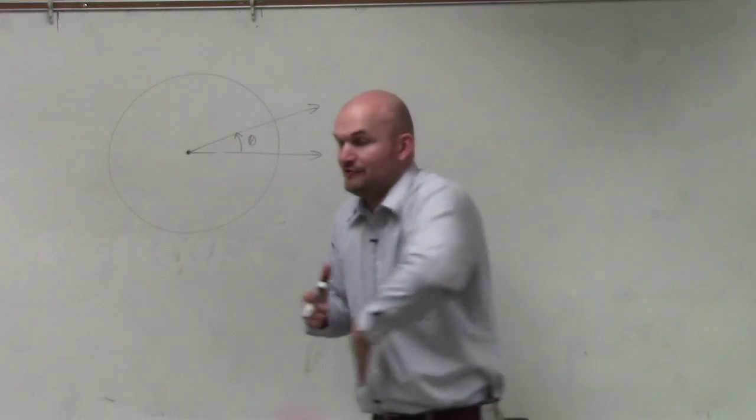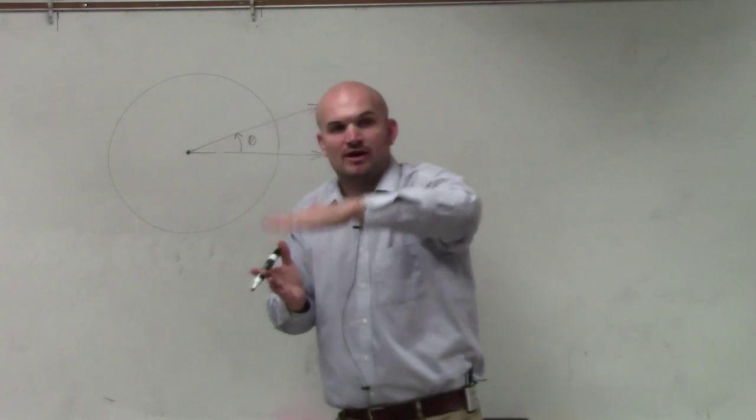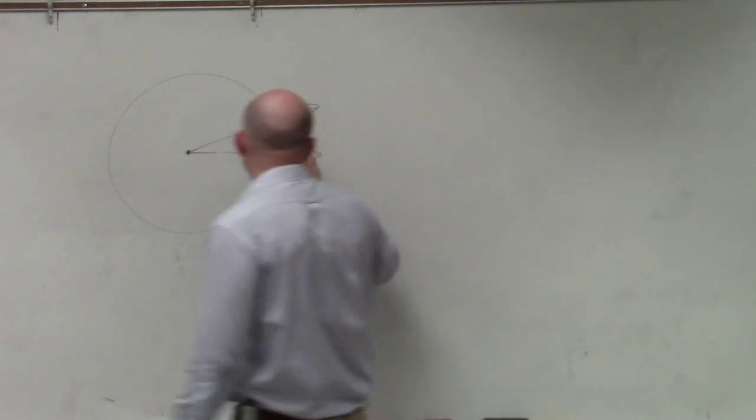That's how we came up with the definition of if you rotate two angles where it goes to that length of a radius around, that's one radian.